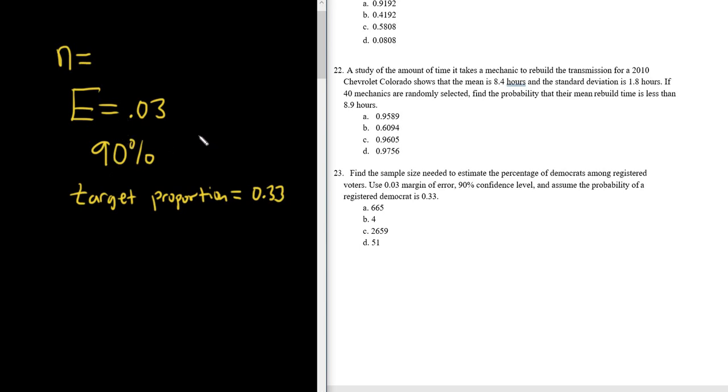And we have to find the width. So the width of the interval, to find it, what you do is you just always multiply E by 2. So it's 2 times the margin of error. So that would just be 0.06. All right, with all this information, now we can go to StatCrunch.